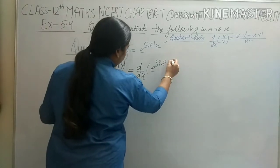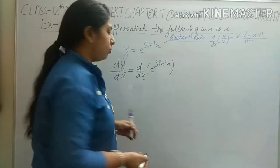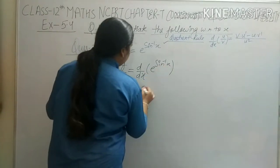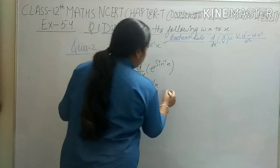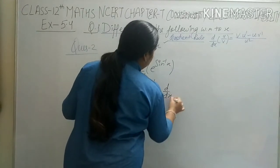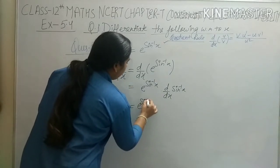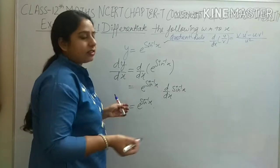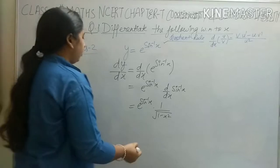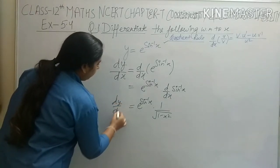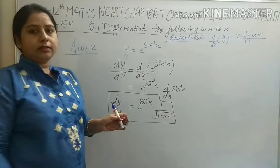From here, the differentiation of e^x gives e^x as it is, so we get e raised to power sine inverse x as it is. Now we will differentiate sine inverse x. Differentiation of sine inverse x is 1 upon square root of (1 minus x²). So dy/dx equals e raised to power sine inverse x multiplied by 1 upon square root of (1 minus x²). This is the differentiation of e raised to power sine inverse x.